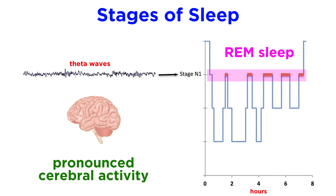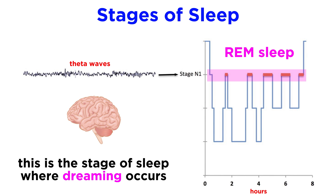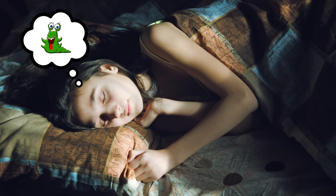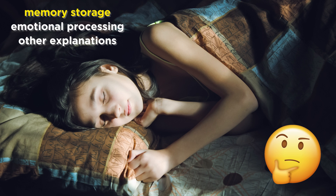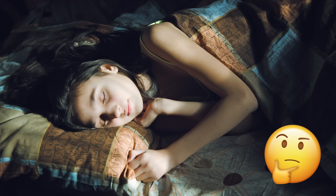Not surprisingly, along with eye movement, REM sleep is characterized by pronounced cerebral activity approaching waking levels. This means that this is the stage of sleep where dreaming most commonly occurs. As to precisely why we dream, there are hypotheses in an evolutionary context regarding memory storage, emotional processing, and other things, but this is not yet completely clear.